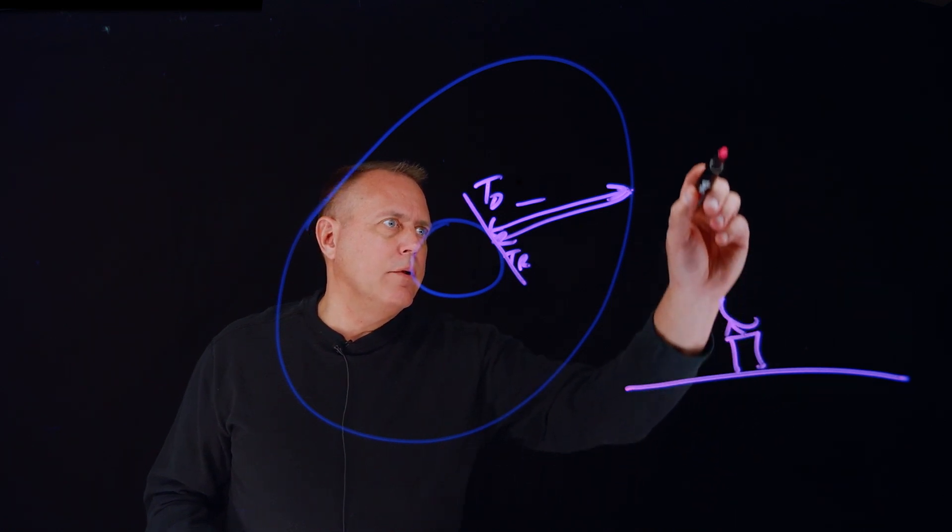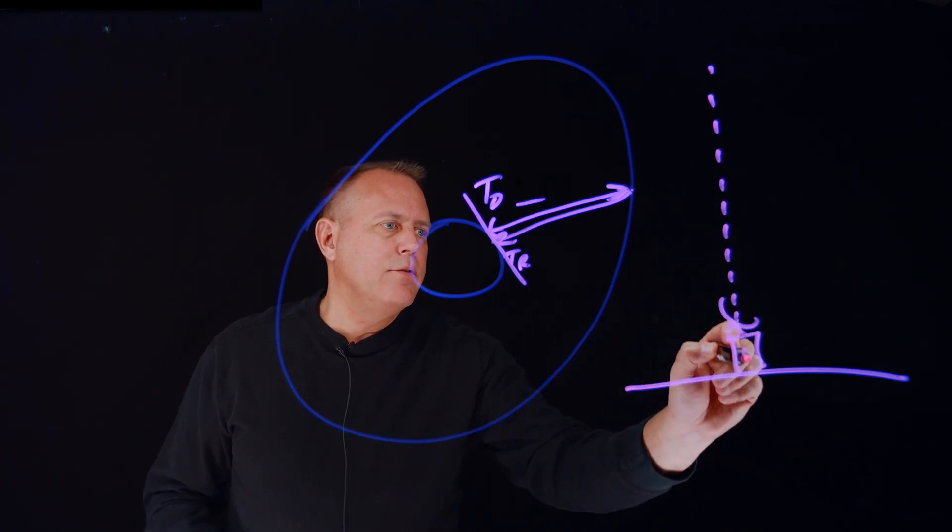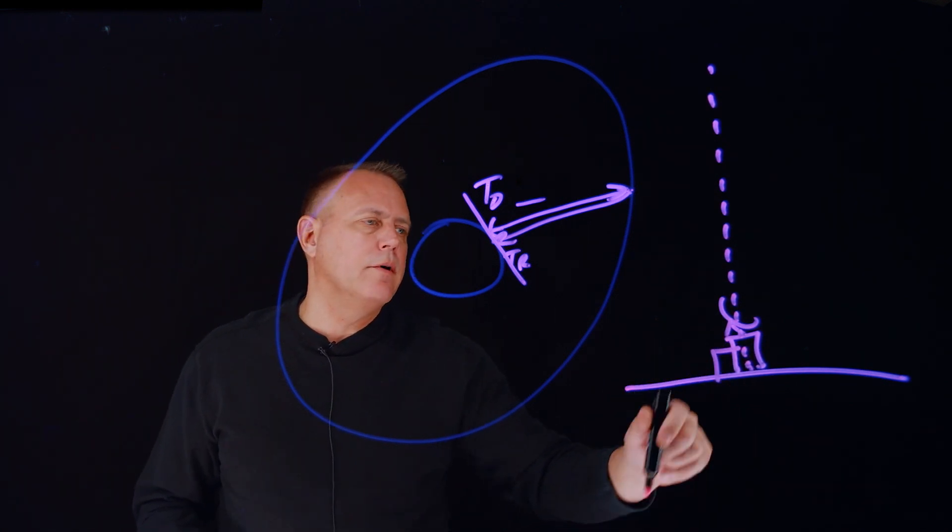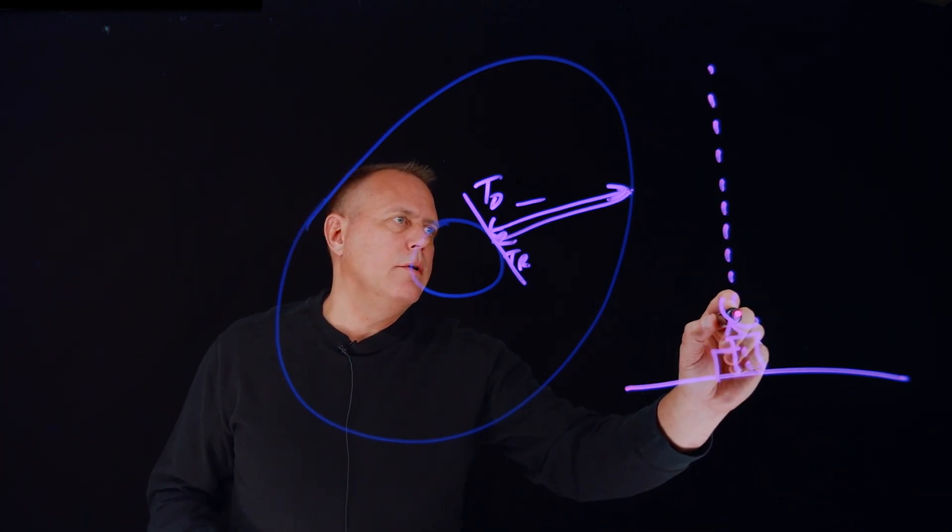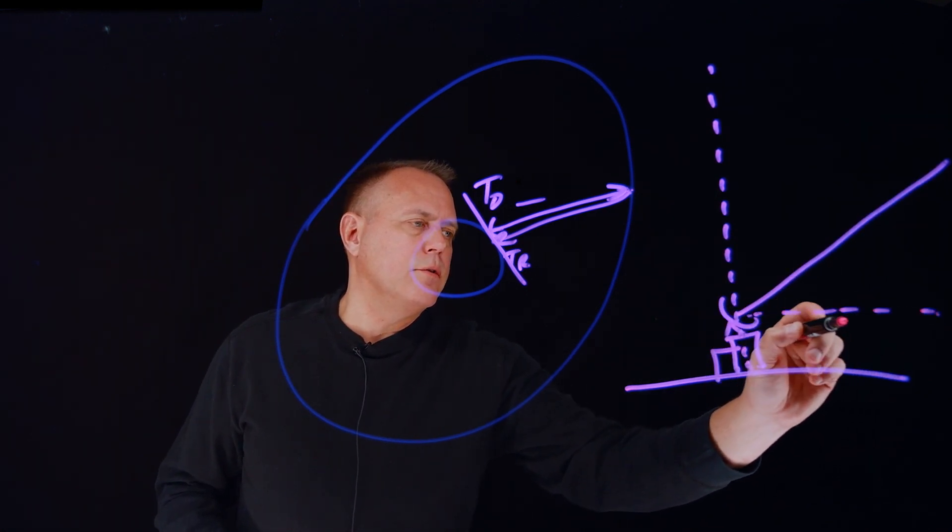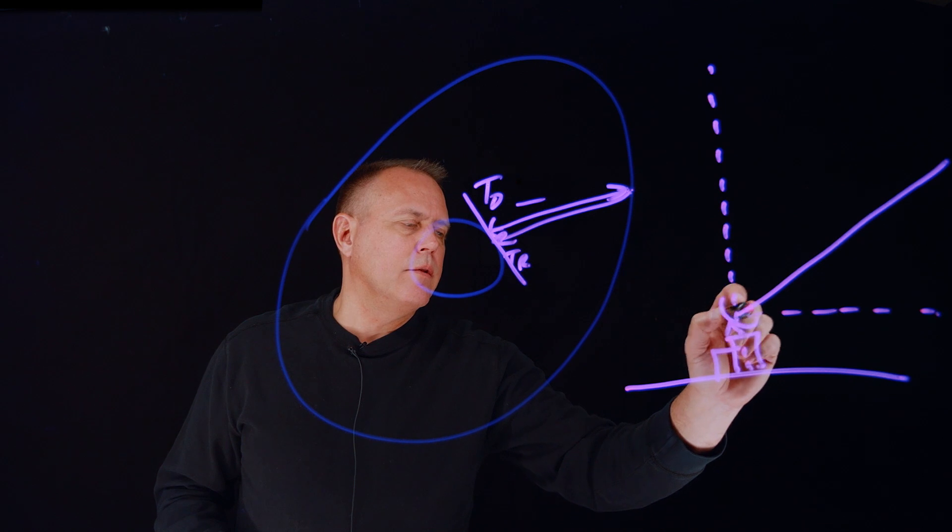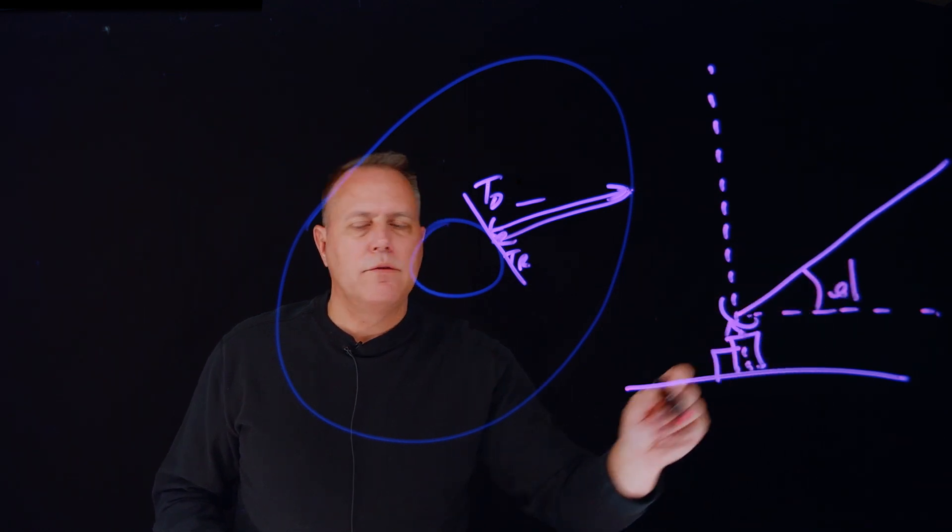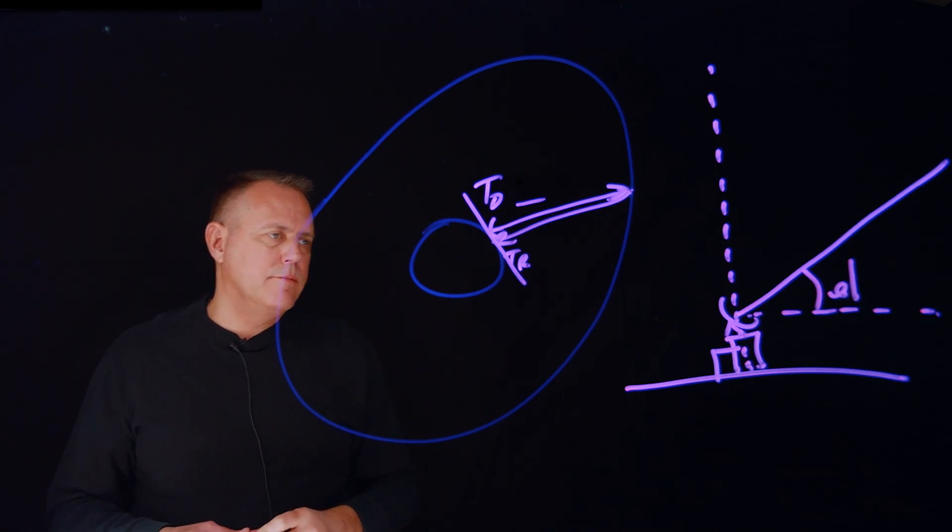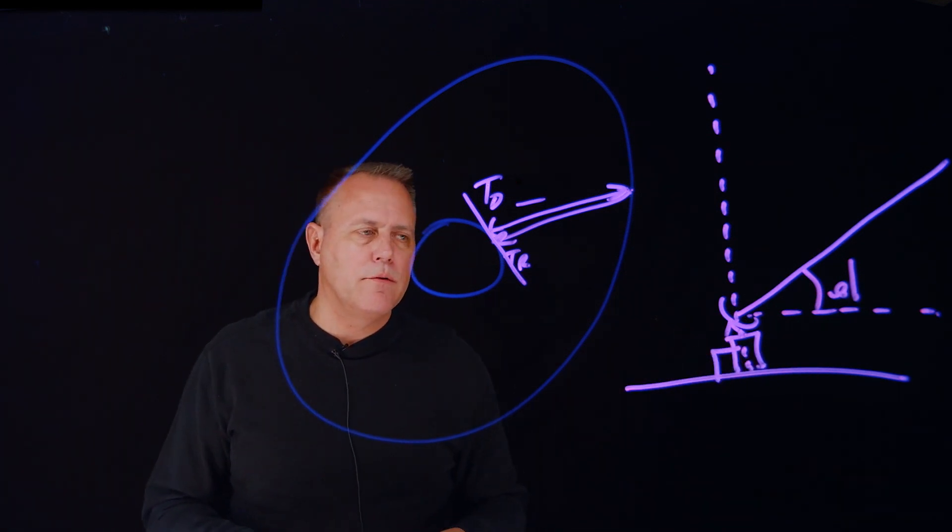And elevation is simply, if I draw an imaginary line that's perpendicular to my local surface of the Earth, then elevation is the angle, and this is just parallel here, relative to where the antenna is, this is the elevation angle. It's the angle off the local horizon, or the local horizontal frame.